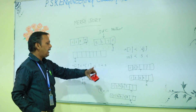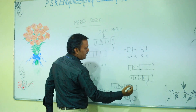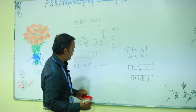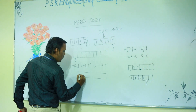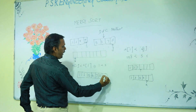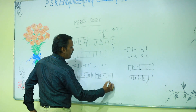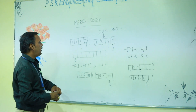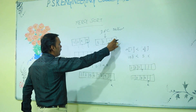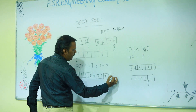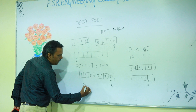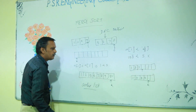Now again we compare 9 and 11 — 9 is less. The new array becomes 1, 3, 5, 6, 7, 8, and 9. Only one position is left out. All the elements in the left-hand side have been placed in the auxiliary array — only one element remains. So finally 11 will be placed in the auxiliary array. Now the sorted array will be displayed — that is the sorted list.